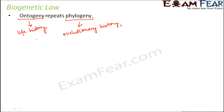Now what do we mean by ontogeny repeats phylogeny? It means that an organism repeats its ancestral history during its development. Let's take the example of human beings. When a human being is formed, the child stays inside the mother's womb, gradually develops different body parts, and keeps growing. When grown enough, it comes out of the mother's womb, receives proper nutrition, grows to become a mature individual, and eventually reaches old age. During this entire life history, the organism repeats its ancestral history.